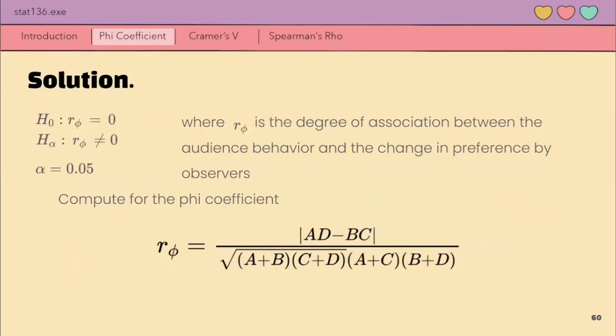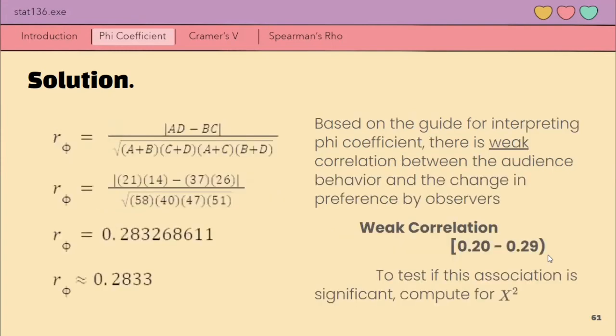For solutions, let's start with defining the null and alternative hypothesis which is phi coefficient is equal to 0 versus phi coefficient is not equal to 0 with alpha equals 0.05. So, ito nga yung formula natin. Again, we just plug in the values that we will find from the given table.